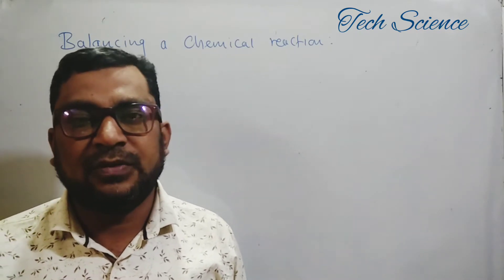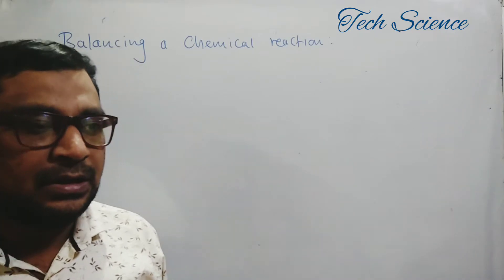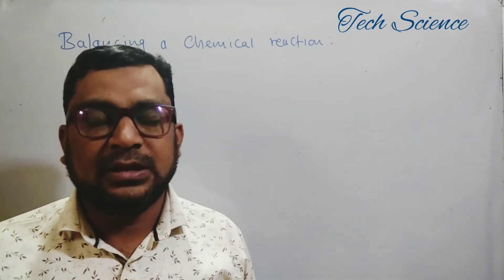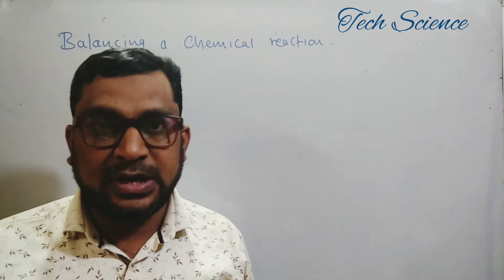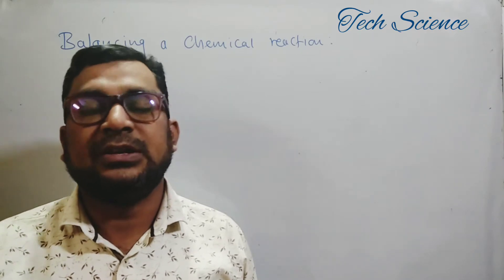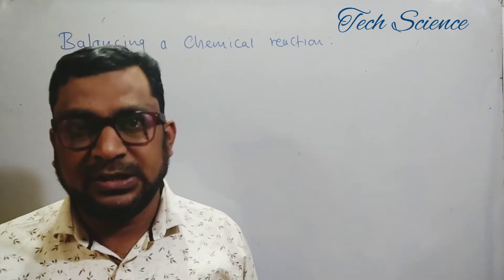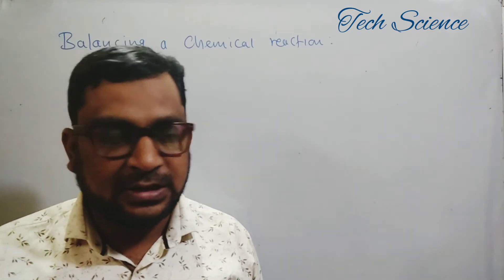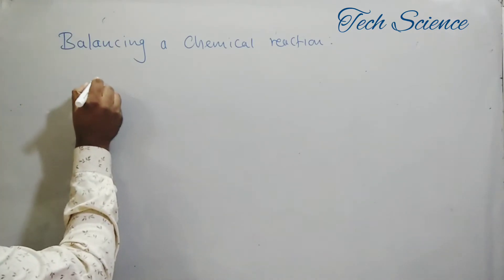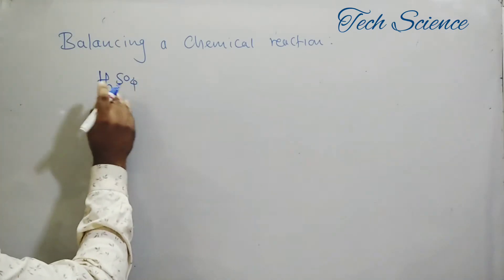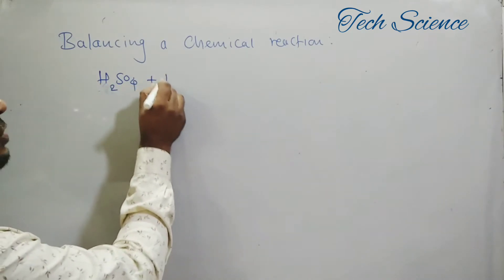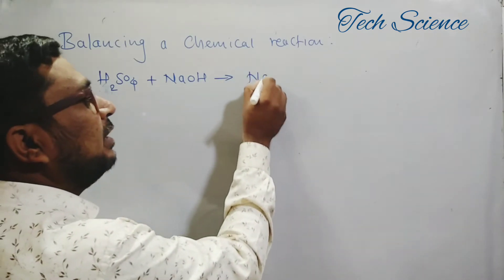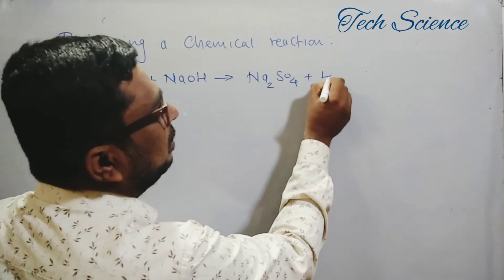Now the question is how to balance a chemical reaction, or what steps you have to follow. Let's consider an example. We have a reaction called neutralization reaction, where an acid reacts with a base to form salt and water. For example, sulfuric acid H₂SO₄ reacts with the base sodium hydroxide NaOH to form sodium sulfate Na₂SO₄ and water.